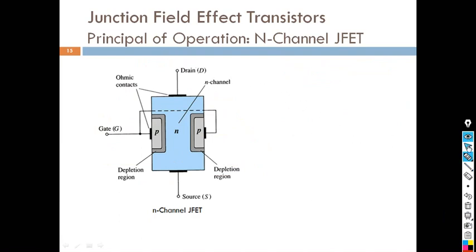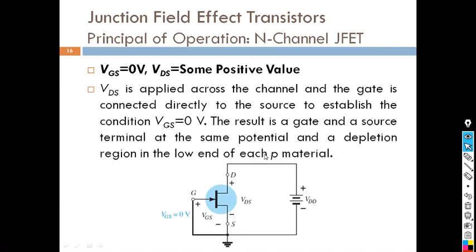Now we can see the operation of the field effect transistor. The P type is connected to the gate, and the depletion region has a constant width initially. When VGS is set to zero, gate and source are shorted. Between drain and source, the N type material is connected to the positive end of the battery, so the P type gate acts under reverse bias.